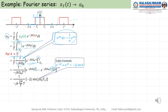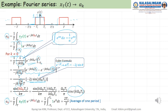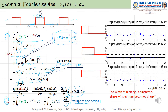Using Euler's formula, we can expand the exponential term. Also, ω0 becomes 2π/T. After expanding, we can obtain a sinc-function result. In the case of k equal to zero, a_0 equals 2T1/T, which represents the average value over one period.